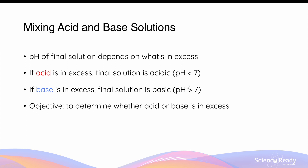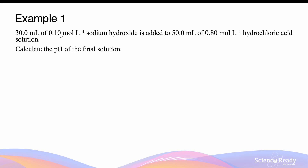So keep this general principle in mind when we go through the examples of this video. Example one: we have 30 mL of 0.1 mol per liter of sodium hydroxide, and this is added to 50 mL of 0.8 mol per liter of hydrochloric acid solution. Calculate the pH of the final solution. We write a chemical equation to first understand the reaction. The reaction between hydrochloric acid and sodium hydroxide produces sodium chloride, which is a salt, and also water. Since you're using a monoprotic acid and a group 1 metal hydroxide, the ratio here will be simply 1 to 1. The ratio between the two reactants is important to consider.